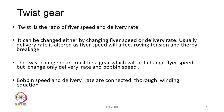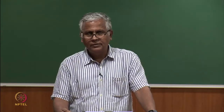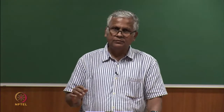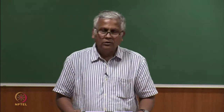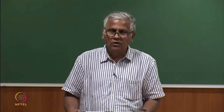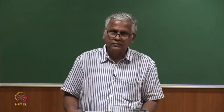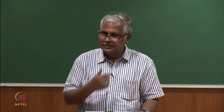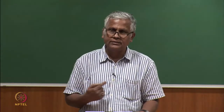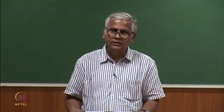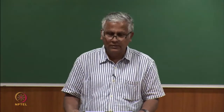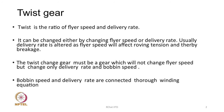The twist change wheel or twist change gear must be a wheel which will not change flyer speed but will change only delivery rate and bobbin speed. This gear should therefore change the speed of delivery and at the same time the speed of the bobbin, because if delivery changes I need to wind less length of roving and hence the bobbin speed needs to be adjusted as well. Bobbin speed and delivery rate are connected through the winding equation.